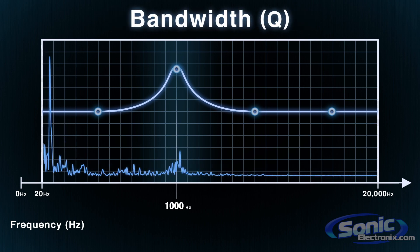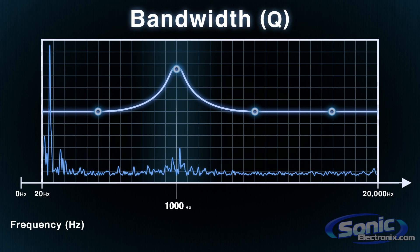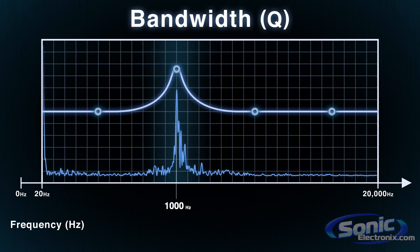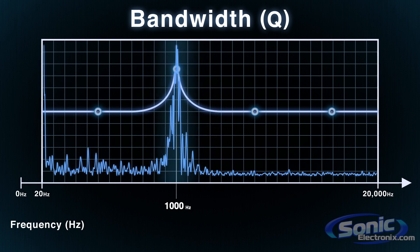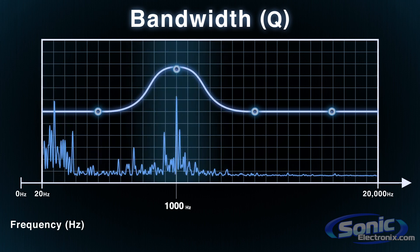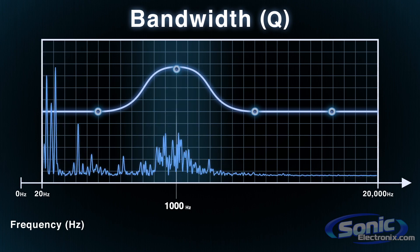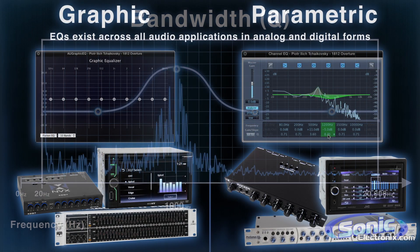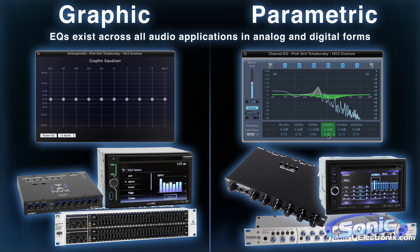Next is bandwidth. This is the width of the frequency band being adjusted. For example, even though I'm adjusting the 1,000Hz frequency band, I can affect a narrow or wide range of frequencies adjacent to the center frequency. This is also commonly referred to as the Q. EQs are typically going to be either a graphic equalizer or a parametric equalizer, and will have a variety of adjustable bands. Some of the most basic EQs have as few as three adjustable frequency bands, while more advanced EQs have over 30 bands to adjust.